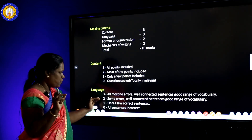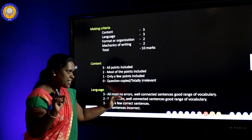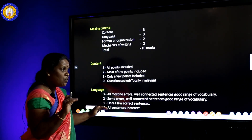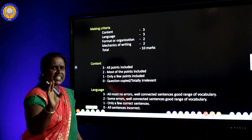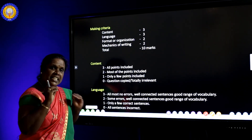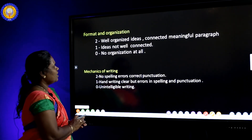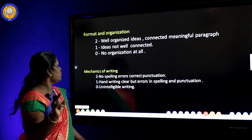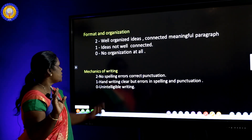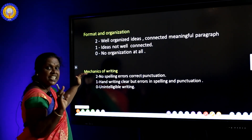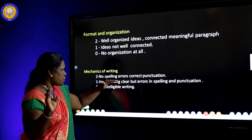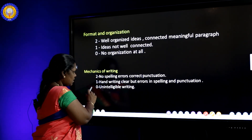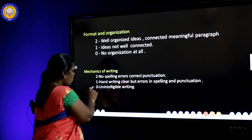For language: almost no errors, well-connected sentences, good range of vocabulary = 3 marks; some errors but well-connected sentences = 2 marks; only a few sentences correct = 1 mark; all sentences incorrect = 0 marks. For organization: well-organized ideas in connected meaningful paragraphs = 2 marks; ideas not well connected = 1 mark; no organization = 0 marks. For mechanics of writing: no spelling errors and correct punctuation = 2 marks; handwriting clear but errors in spelling and punctuation = 1 mark; unintelligible writing (impossible to understand) = 0 marks.